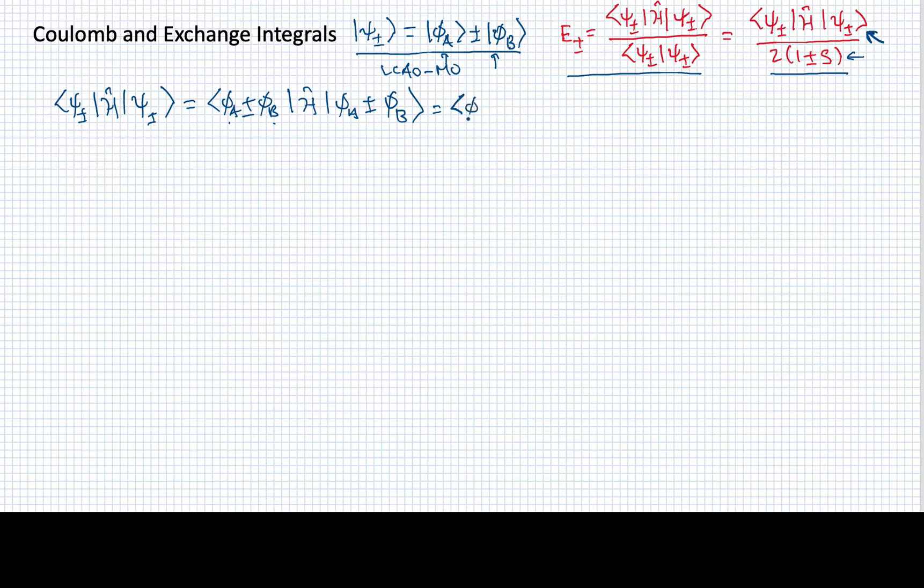We'll have phi A Hamiltonian phi A. We'll have plus or minus phi A Hamiltonian phi B. We'll have plus or minus phi B Hamiltonian phi A. And then with two plus or minuses, we'll end up with a plus phi B Hamiltonian phi B. So these are the four different integrals that we ideally would have to calculate.